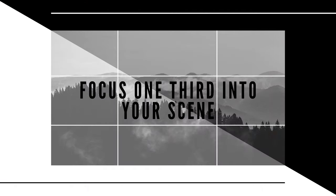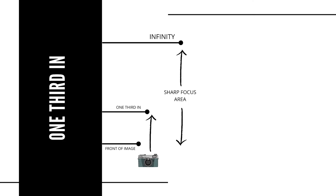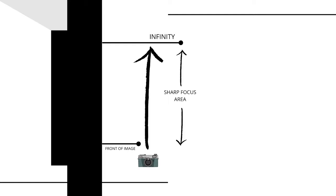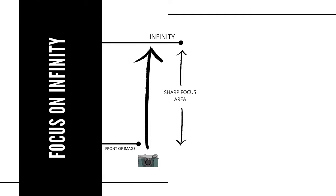Next up is focusing a third into your scene. I think this works well in a lot of circumstances and it's easy to figure out, especially if you have your rule of thirds grid showing on your LCD. Simply focus a third in and adjust your aperture until your foreground and background are acceptably sharp. Then we've got infinity focusing — focusing the lens to infinity and selecting an aperture that allows you to get your near foreground elements in focus.